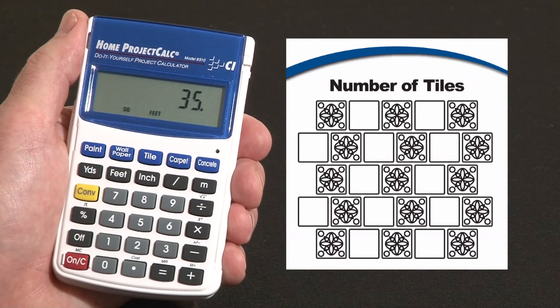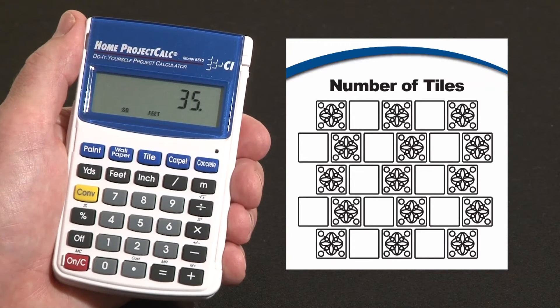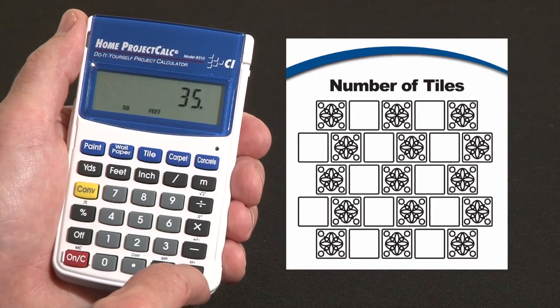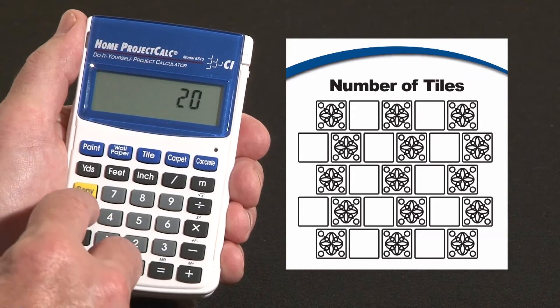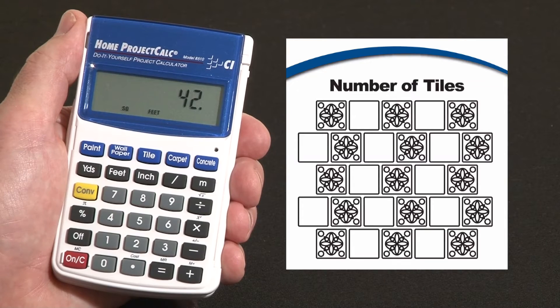Now let's add about 20% for waste because we've got to do a lot of intricate cuts. We want to match some patterns. Say plus 20% gives us a total of 42 square feet.